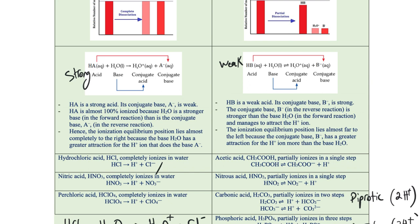Each hydrogen ion is donated one at a time. In the first equation, the first hydrogen ion is donated. Then the conjugate base HCO3- acts as an acid again, donates its H+, and is left with the carbonate ion. For phosphoric acid, which partially ionizes in three steps: H3PO4 donates the first hydrogen to form H2PO4-; H2PO4- donates the second to form HPO4²-; and HPO4²- donates the last hydrogen to give the conjugate base PO4³-.